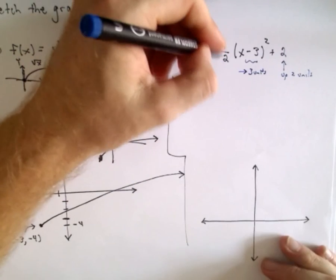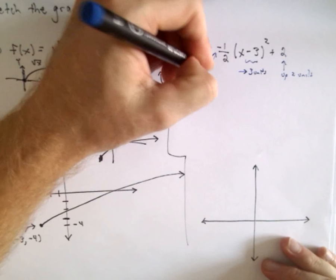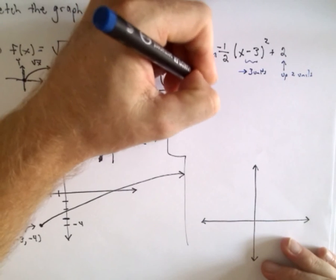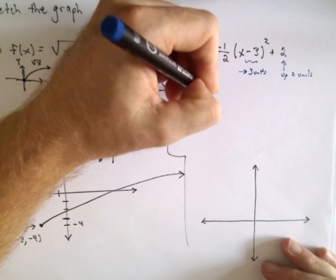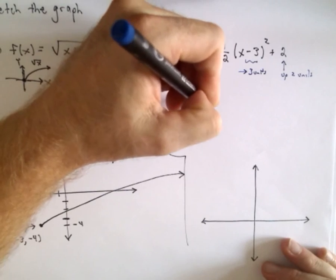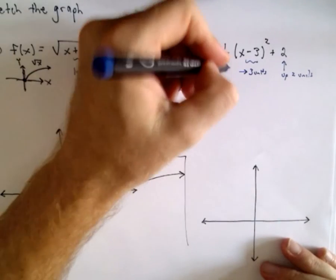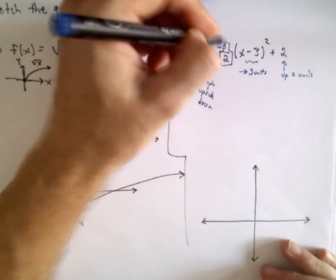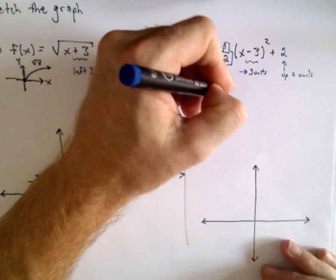Now we have this negative one half out front, so the negative recall is going to flip the graph upside down, it's going to reflect it. And this one half out front, that's going to make the parabola wider.